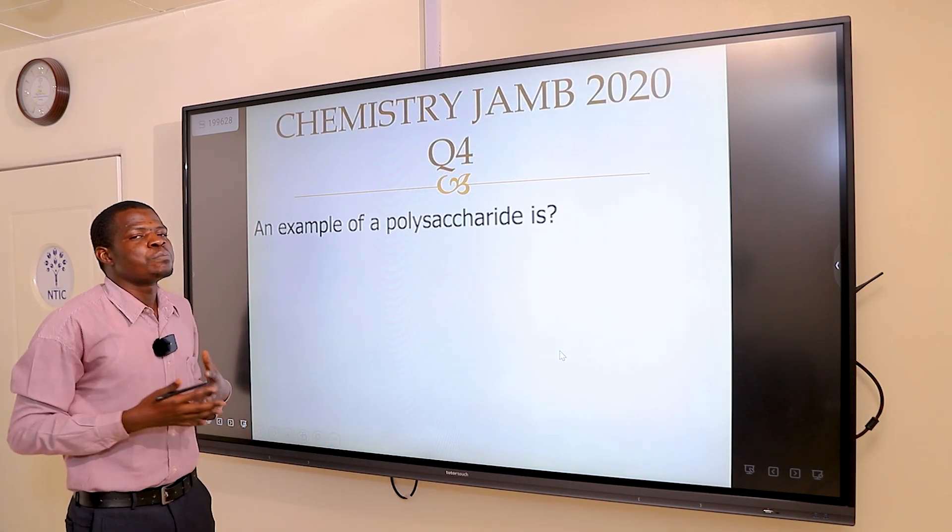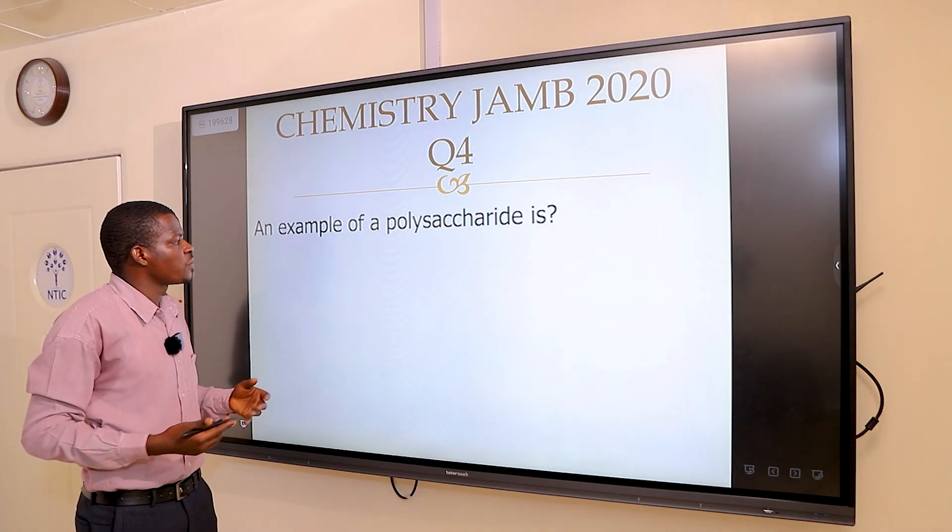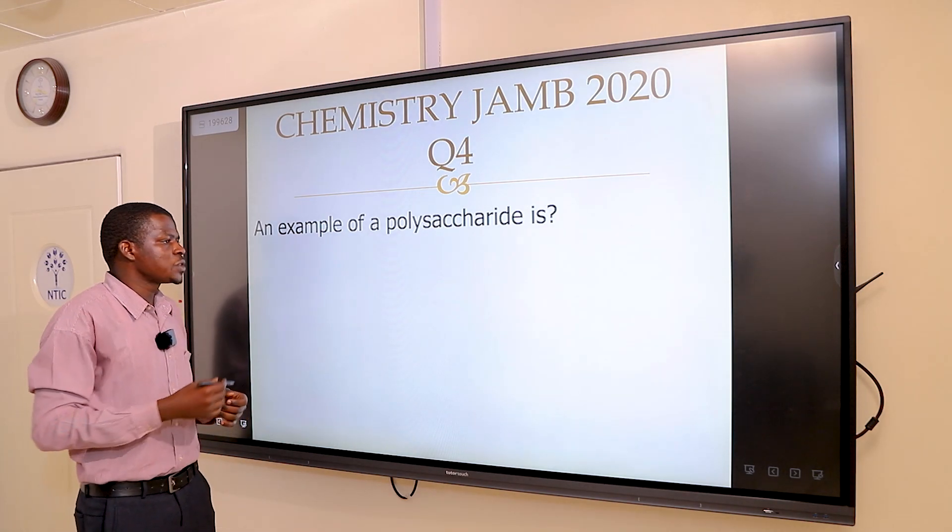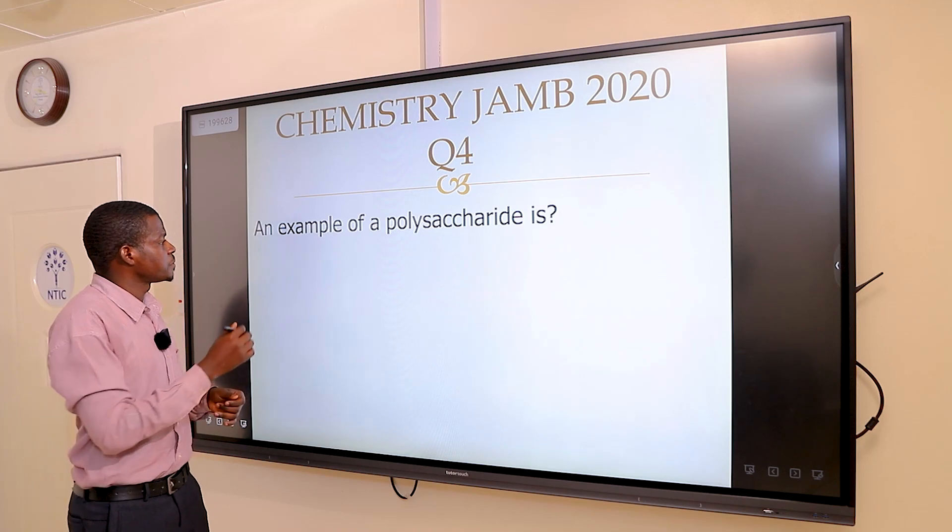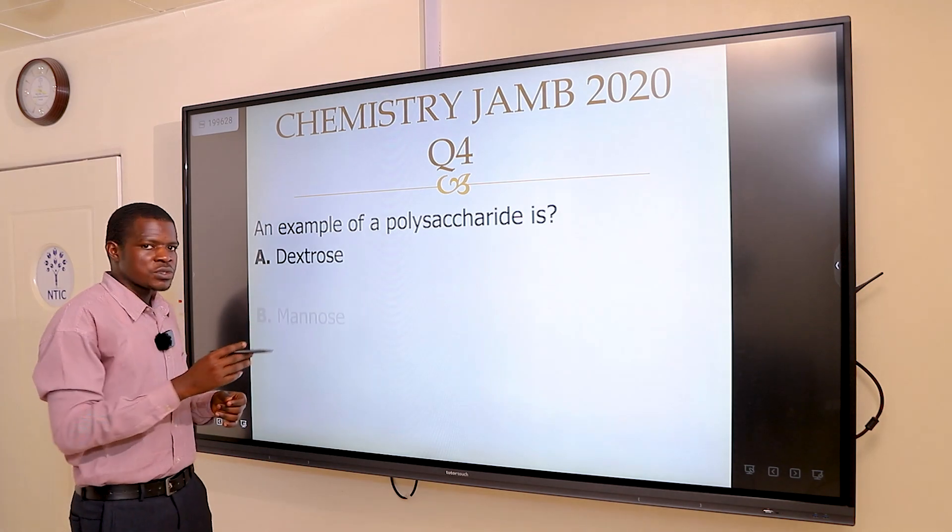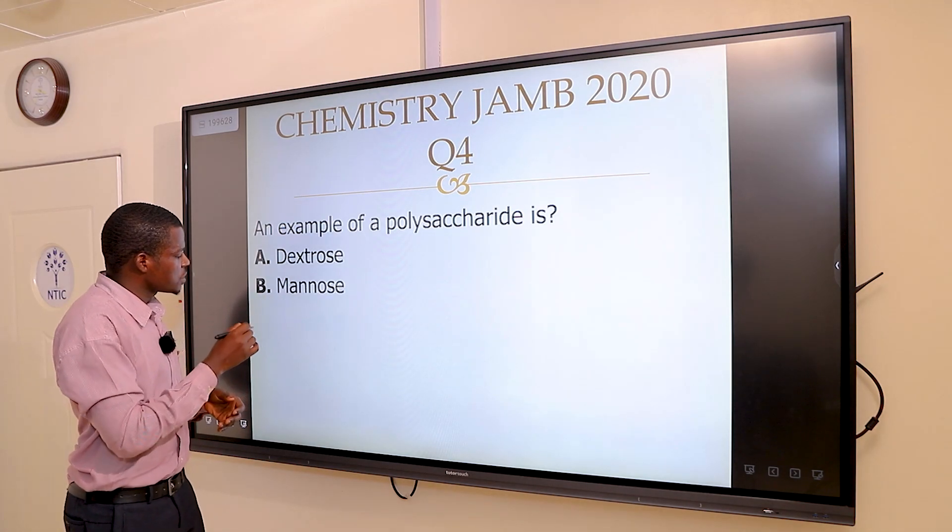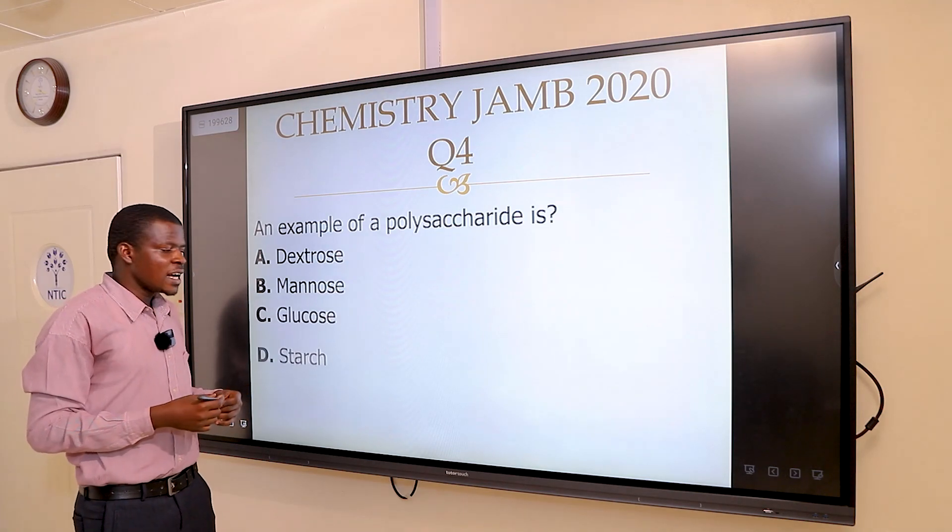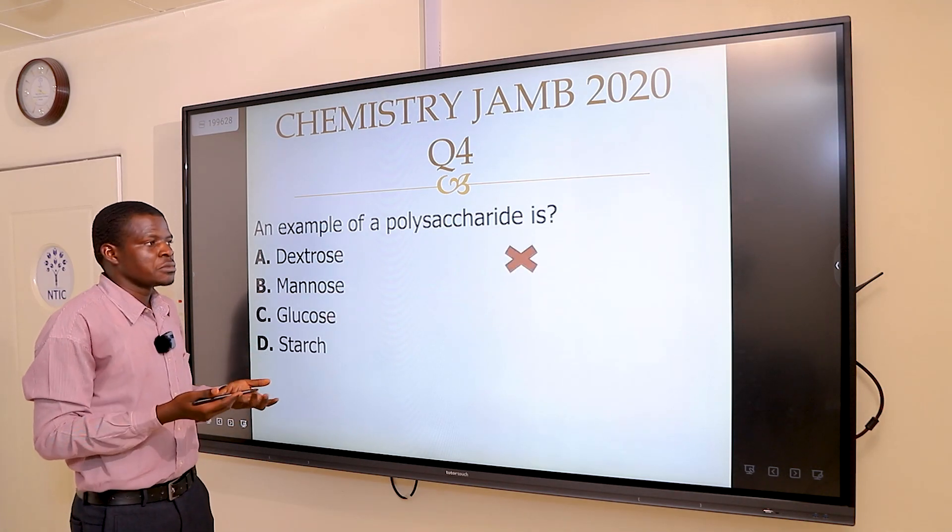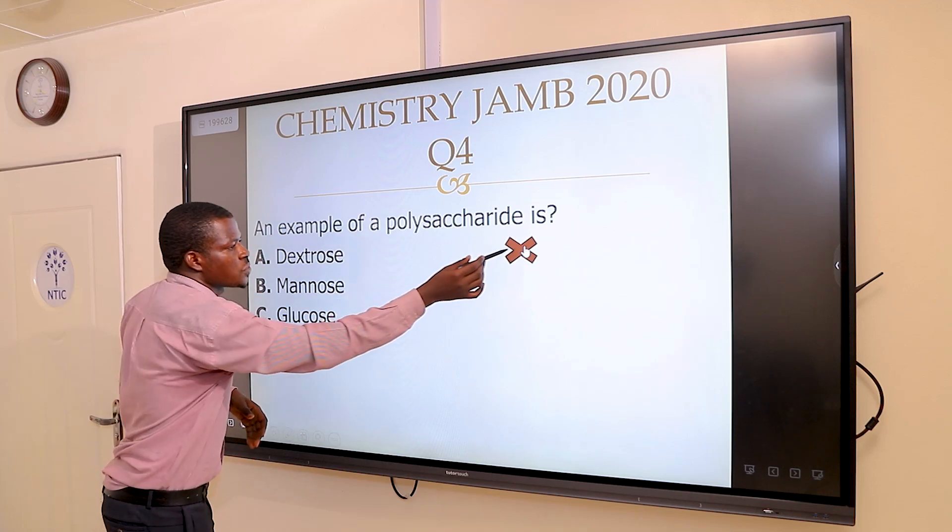The next question says: an example of a polysaccharide is. We're provided with four options. Option A says dextrose, B says mannose, C says glucose, and D says starch. What are the wrong options? Option A is wrong.